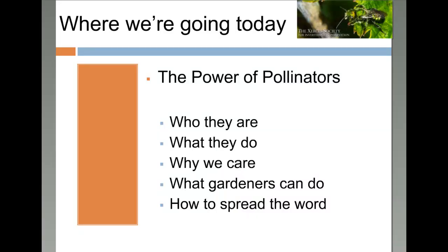Let's look at an overview of where we're going today. We're going to talk about who pollinators are, what they do, why we care, and what gardeners can do. All of us can do something — we probably already are doing a lot to create habitat and conserve pollinators. We'll talk about garden design elements that cut across whatever region you're in, and then we'll talk about materials and how you can help spread the word about pollinators. We'll go fairly quickly, as we only have about 50 minutes.